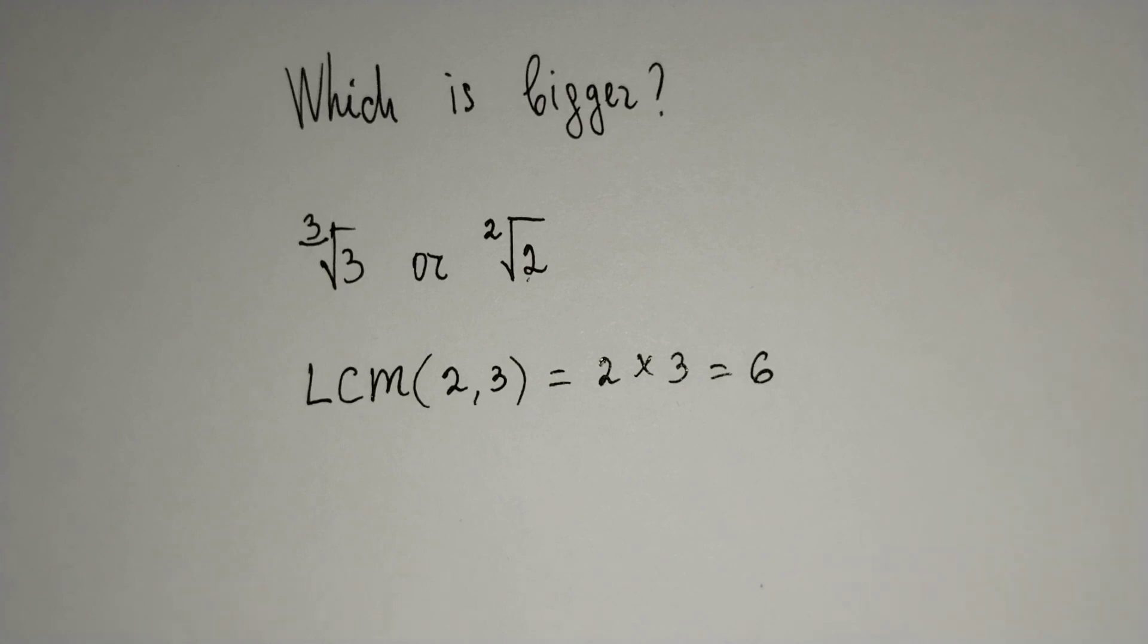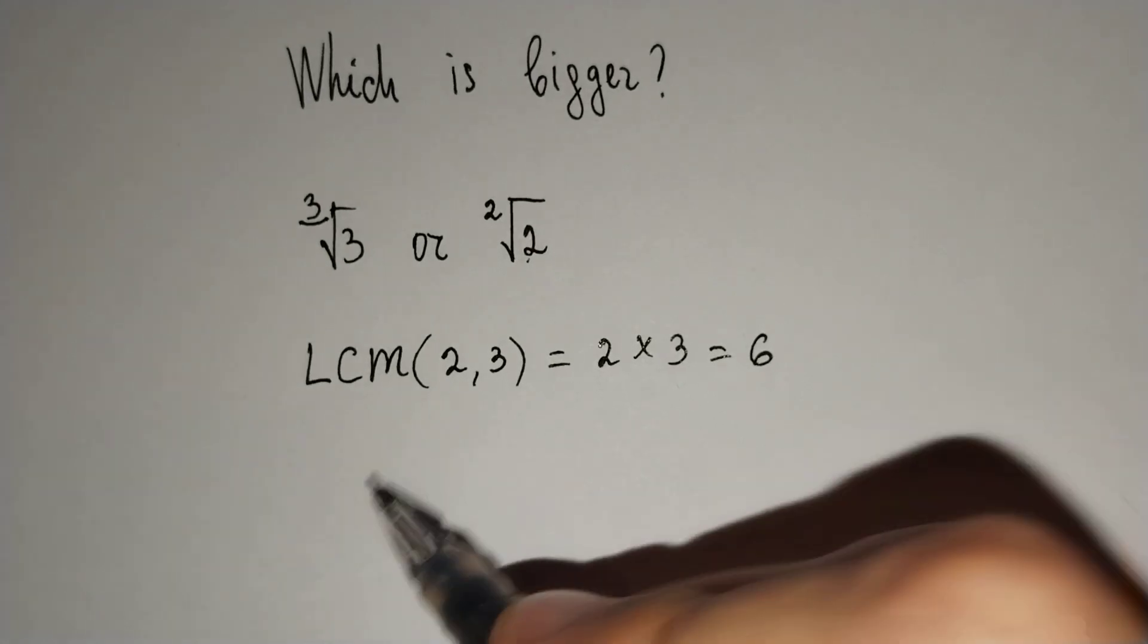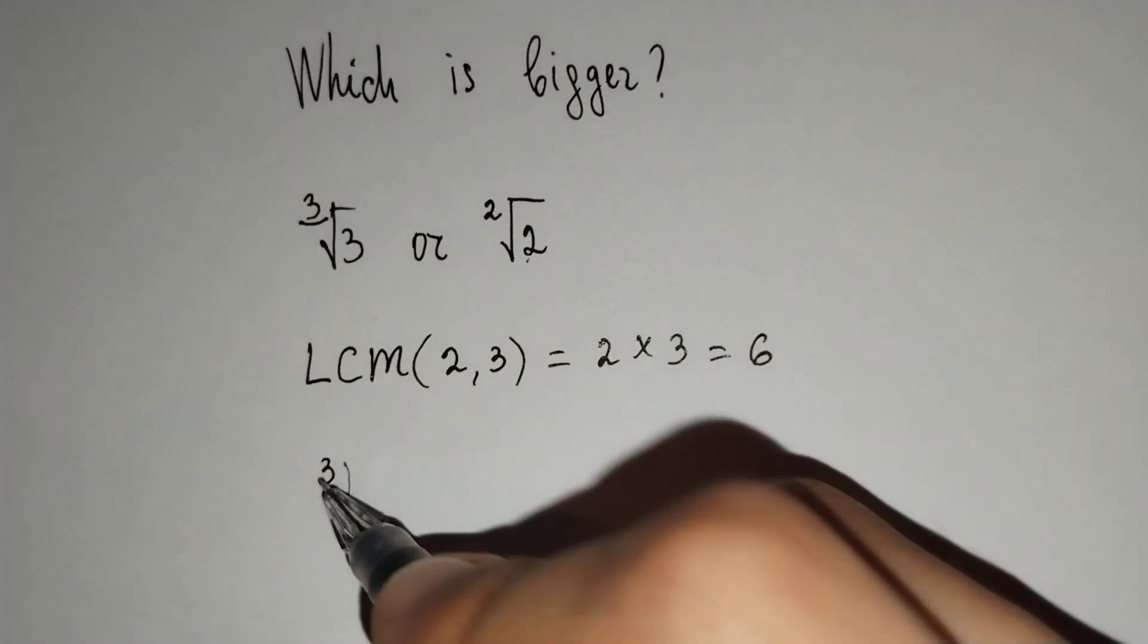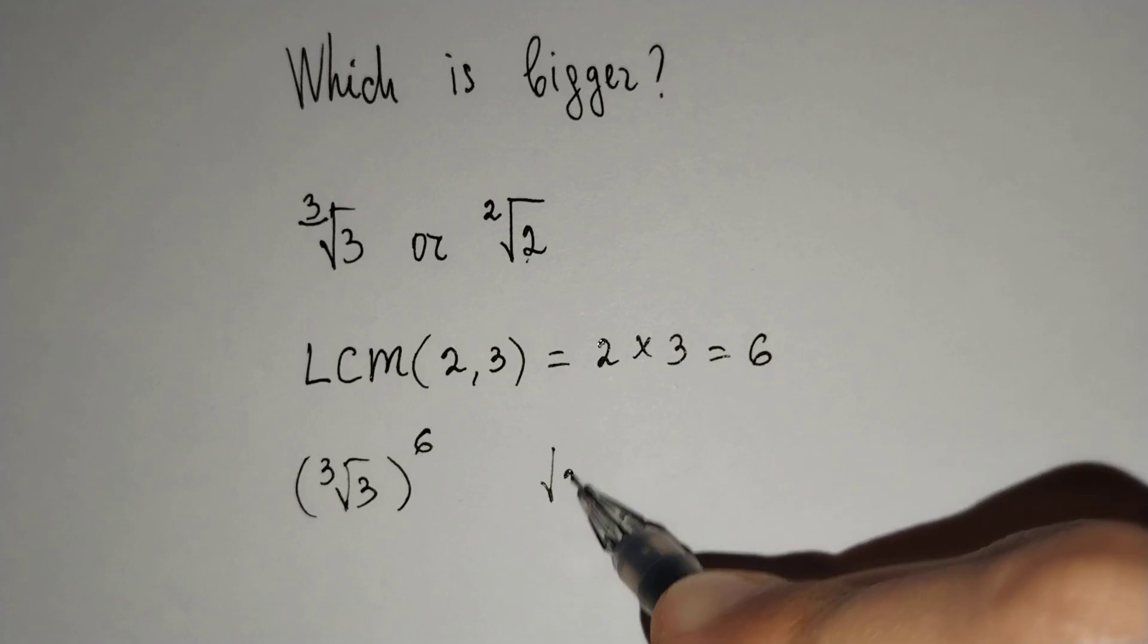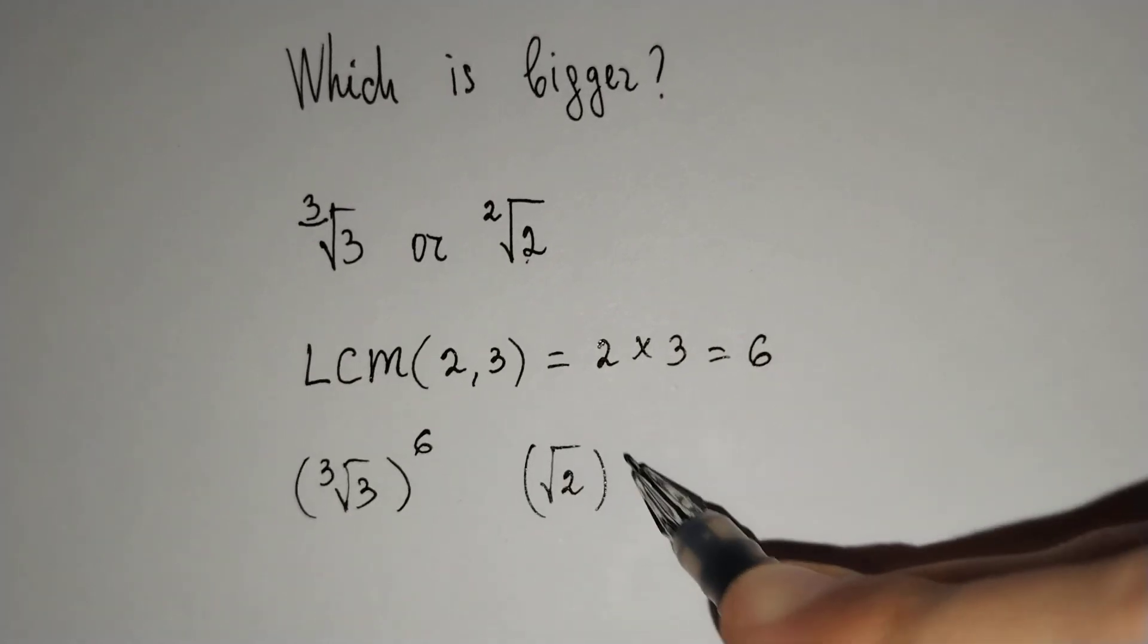After that, we will raise both radicals to the sixth power. The cube root of 3 power 6 and the square root of 2 power 6.